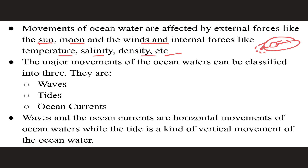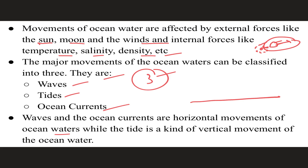The major movements of ocean water can be classified into three types. The three major movements of the ocean are: first, waves; second, tides; and third, oceanic currents. Waves and ocean currents are horizontal movements of ocean waters — if this is the ocean surface, then waves and ocean currents move horizontally.